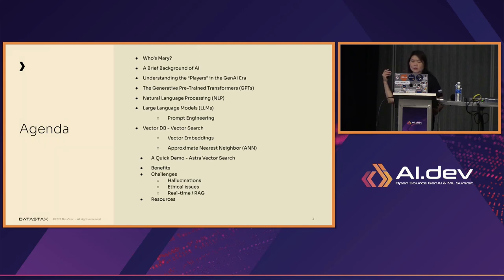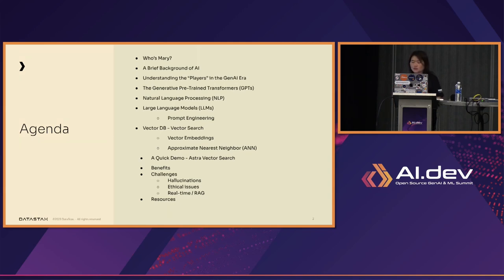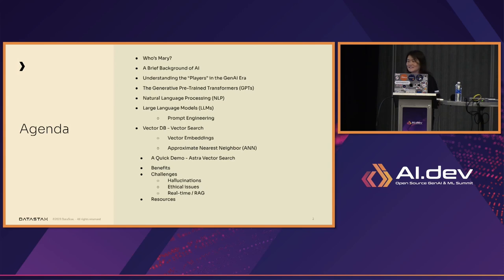So this is the agenda. I'll give a quick introduction and then a brief background of AI and Gen AI, the players in the new Gen AI era, then introduce terminologies like GPTs, NLP, LLMs, vector databases, vector search, and vector embeddings. There's also a short demo — it's only a 30-minute talk — to show how you can leverage Astra, our managed Cassandra in the cloud. You get $25 every month free tier access and you don't need to give your credit card.